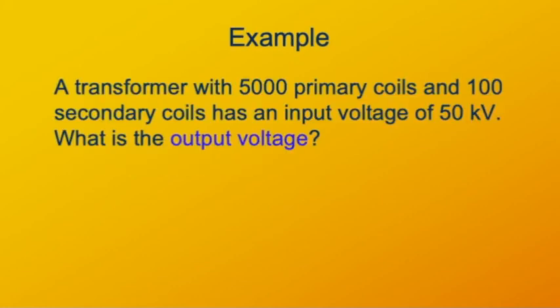To finish, I'll run through an example problem. A transformer has 5000 primary coils and 100 secondary, and an input voltage of 50 kilovolts. Find the output voltage. Before we write anything down, we see this is a step-down transformer, so the output will be less than 50 kilovolts.